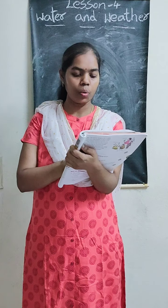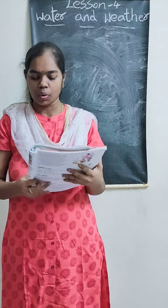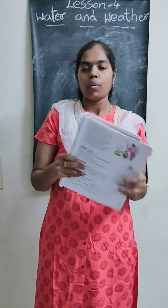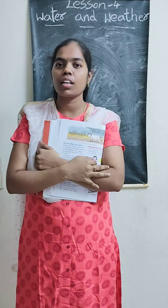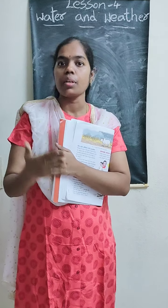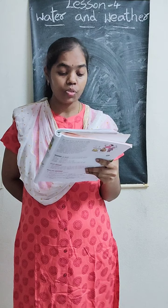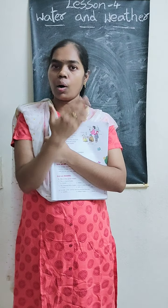When it rains, the part of the earth on which the rain falls becomes cool. Farmers welcome the rain when it falls at the right time, because rain is good for crops. If it rains at the correct time, farmers start their crops because crops need water. However, too much rain can cause floods.